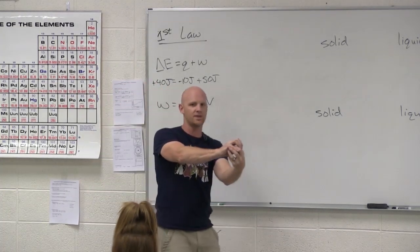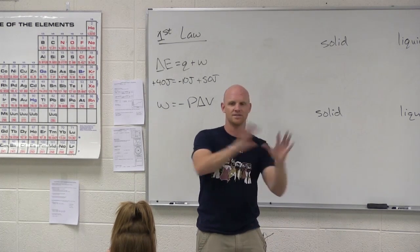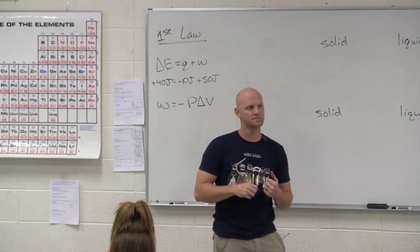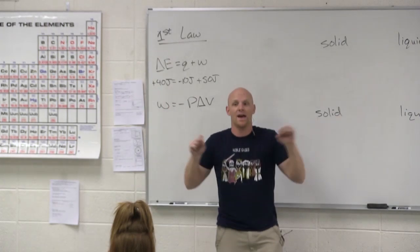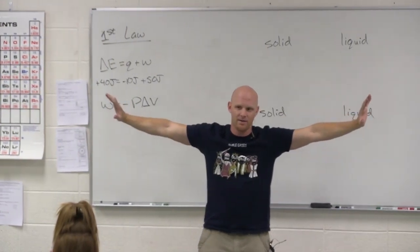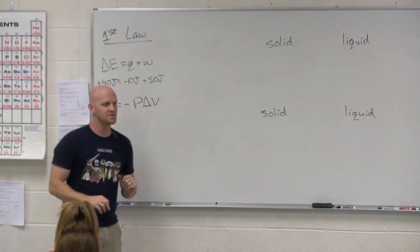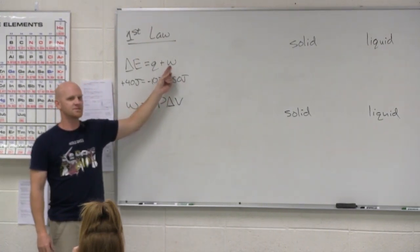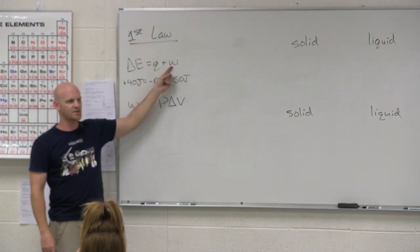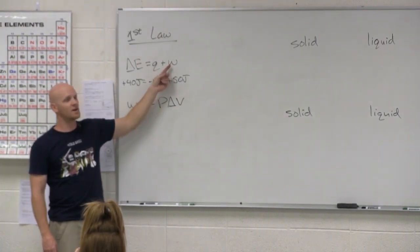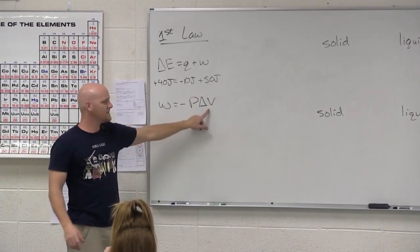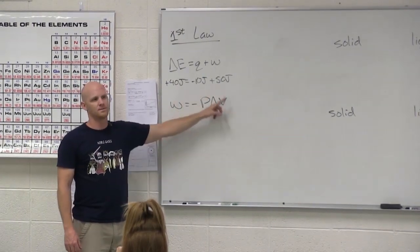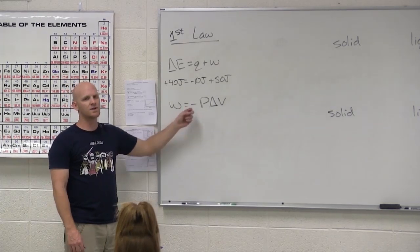Now however, if I have this gas that's all compressed and if somehow I had a magic switch that made the can that it's in disappear, what would that gas do? It expands and it pushes the surroundings back. And so it's doing work on the surroundings. And if the system does work on the surroundings, W is negative. If you do the work and you're the system, do you have more energy or less energy when you're done? Less. And so when the system does work, W is negative. So when a gas expands, delta V is positive. P is always positive. But the negative sign means that work comes out negative. So for an expansion, work is negative. For a compression, work is positive.